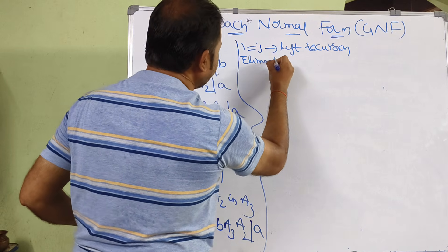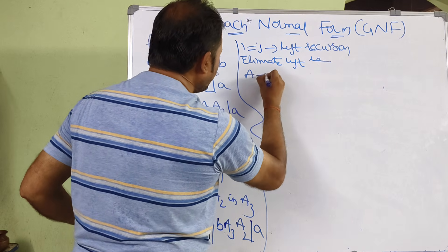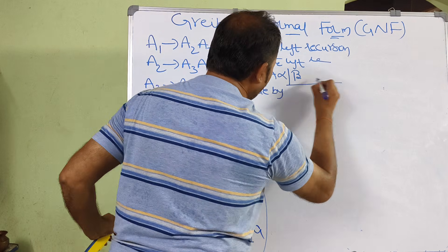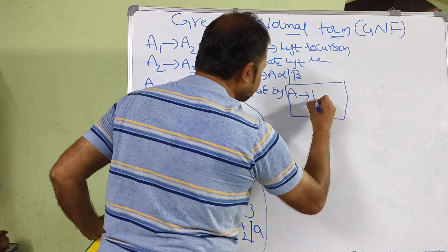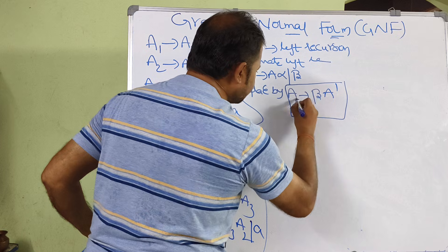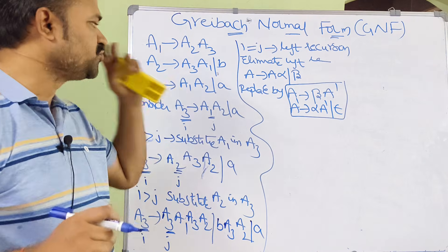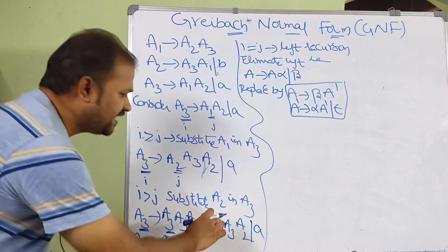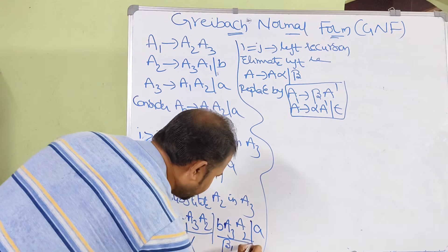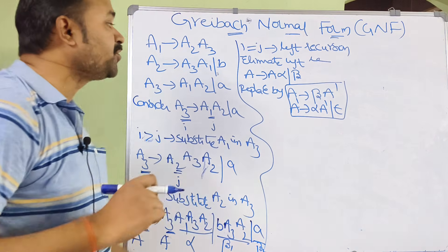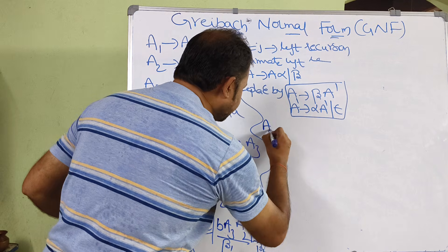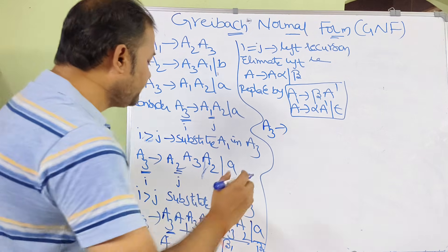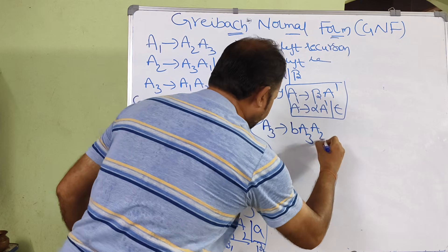In order to eliminate left recursion, the formula is: if the production is in the form A produces A alpha or beta, replace it with two productions — A produces beta A-dash, and A-dash produces alpha A-dash or epsilon. Here A means A3, alpha is A1, A3, A2, and we have two beta values: beta1 is B, A3, A2 and beta2 is A. So A3 produces B, A3, A2, Z3 or A, Z3, where Z3 represents A-dash.